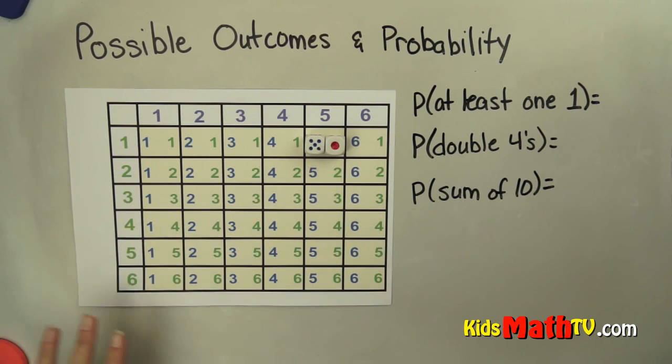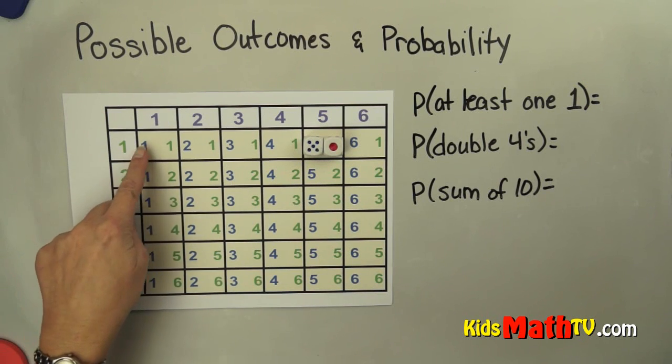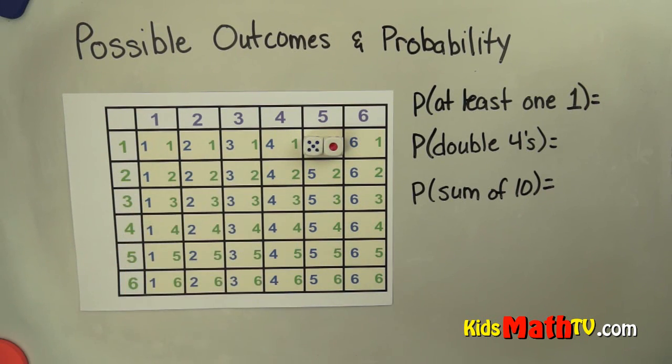This chart shows all of the possible outcomes when you roll two dice. You can have a 1 and a 1, a 2 and a 1, a 3 and a 1, and so on and so forth, with all the different possibilities, all the way up to a 6 and a 6.